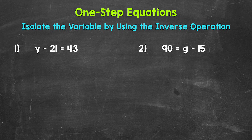Let's jump into number one, where we have y minus 21 equals 43. We need to isolate that variable of y — we need to figure out what y equals. Since 21 is being subtracted from y, we need to undo that subtraction by using the inverse operation. The opposite of subtraction is addition.